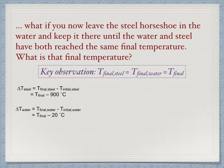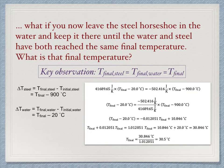We substitute all that we know into the C_water ΔT_water equals minus C_steel ΔT_steel expression. 41,689.65 joules per Kelvin times T_final minus 20 equals minus 502.416 joules per Kelvin times T_final minus 900. Divide through with 41,689.65 joules per Kelvin times T_final. Note how the units nicely cancel out and multiply through the T_final minus 900 term. We have T_final minus 20 equals minus 0.012051 times T_final plus 10.846 degrees Celsius.